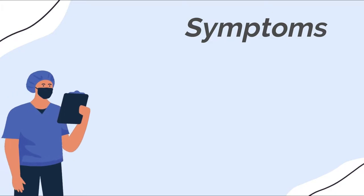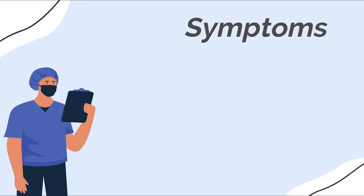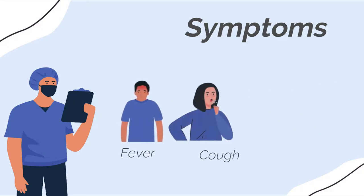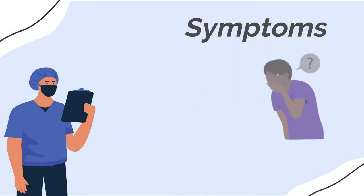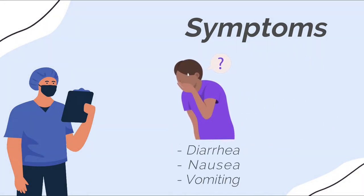Most people confirmed to have MERS coronavirus infection have had severe respiratory illnesses with symptoms of fever, cough and shortness of breath. Some people also had diarrhea, nausea and vomiting.